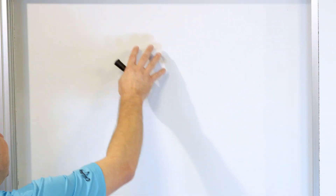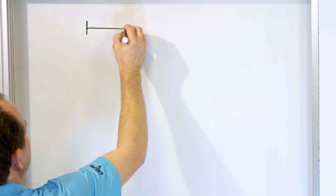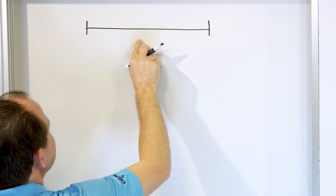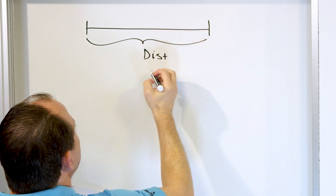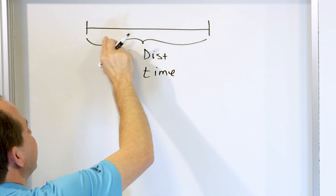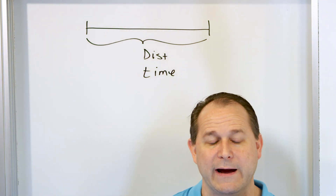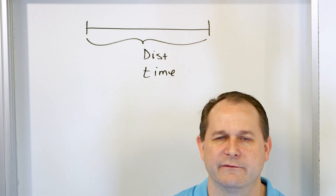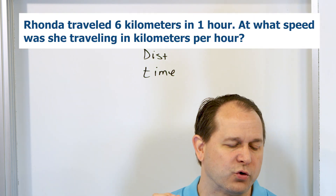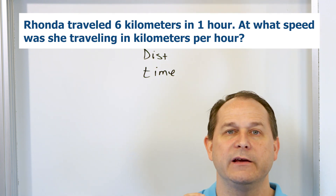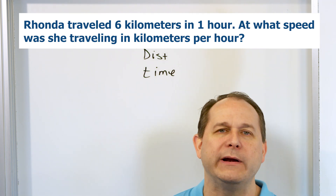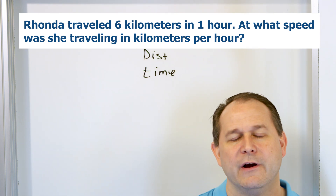And so it's going to be easier to show as we talk through some of these examples. So the idea of distance traveled in time — we have a starting point and then an ending point, and there's a distance that we travel. And then of course, we also know that there's time — how far do you travel and how long do you take to travel. So let's take the simplest distance and speed example I can come up with. Rhonda traveled six kilometers in one hour. At what speed was she traveling in kilometers per hour?